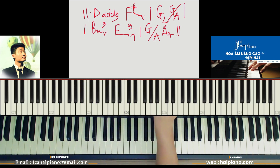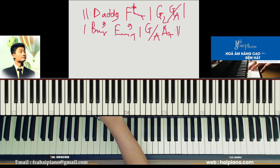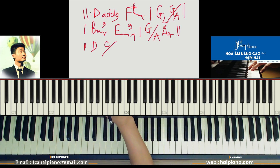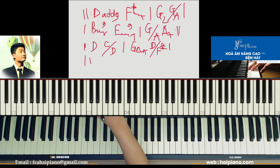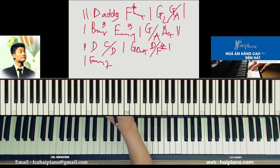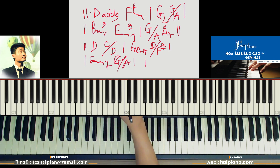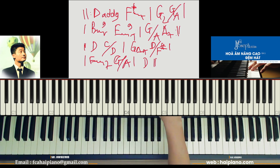Tiếp tục thì sang đoạn B. Đây là A. Bây giờ B các bạn có thể dùng thêm một cái vòng nữa. Ví dụ như là Ré, rồi về Đô bắt Ré, rồi về Son tam giác 79, Ré bắt Pha thăng, vào Mi thứ 7, về Son bắt La, xong quay lại về Ré. Rất là khu thú vị ha.